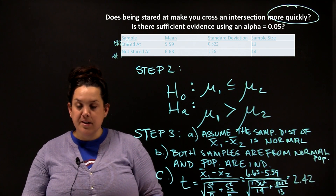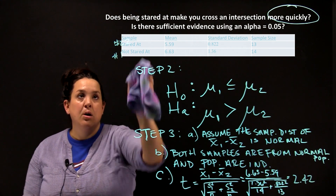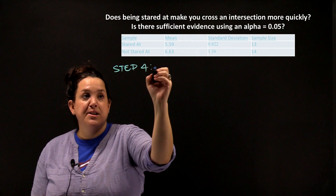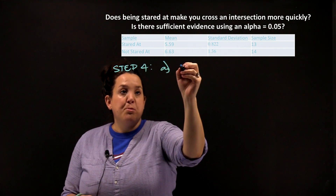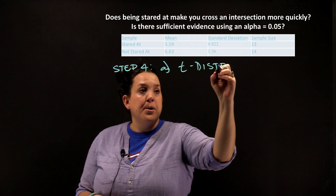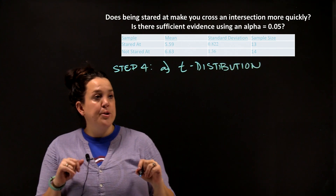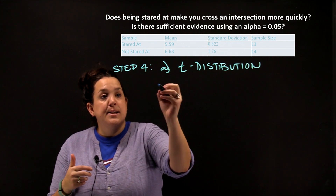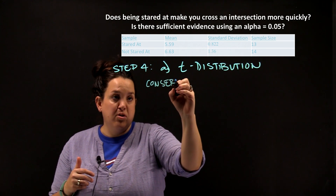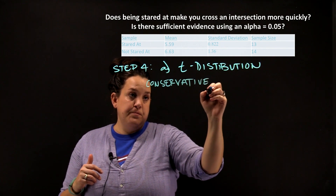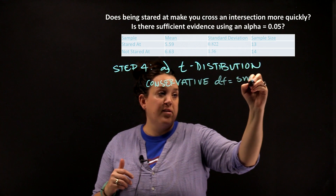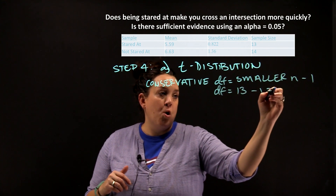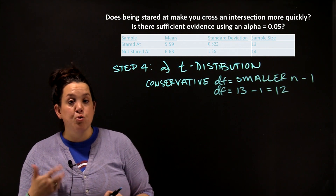Armed with the test statistic, we move into step four: making our decision. The first part is to state what distribution the test statistic follows. Because we have a t, we're using the t-distribution. We'll use conservative degrees of freedom — there's an approximation formula but it's very complex. Instead, conservative degrees of freedom is calculated by taking the smaller n and subtracting one. Our smaller n was 13, so subtracting one gives us 12 degrees of freedom.